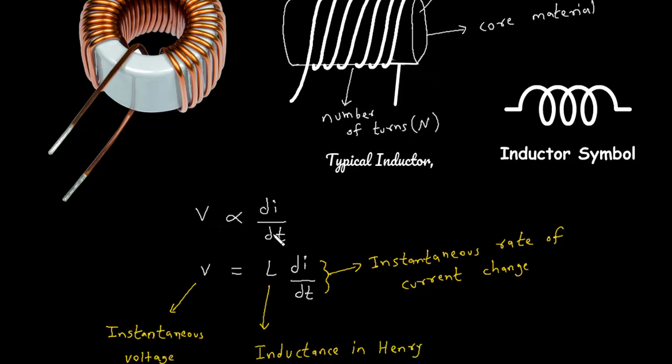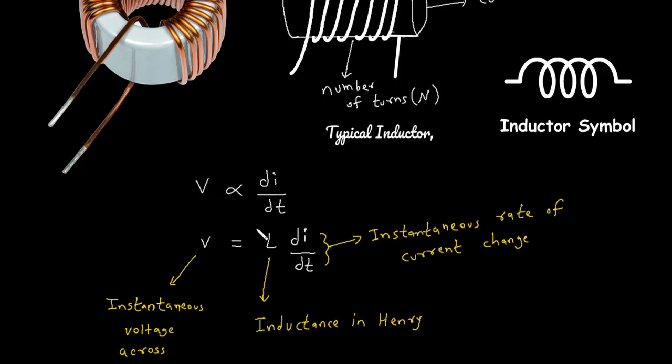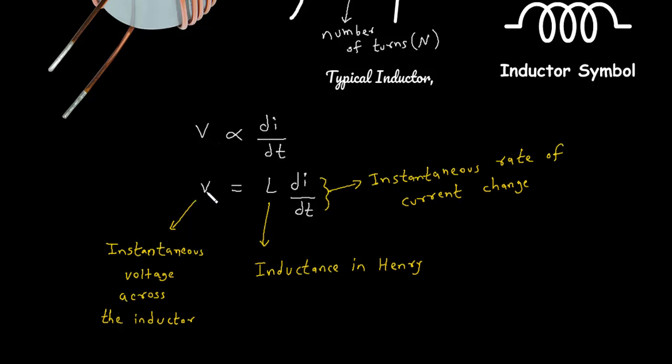Mathematically, V equals, that is, instantaneous voltage across the inductor is equal to L times di by dt. When we remove this directly proportional sign, there will be an inductance L. So V equals L di by dt. This L represents inductance in Henry, and this di by dt is the instantaneous rate of current change.